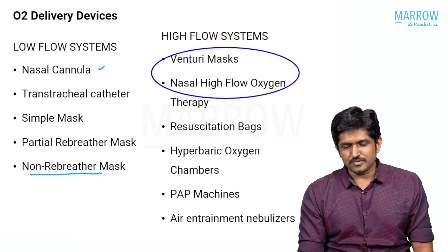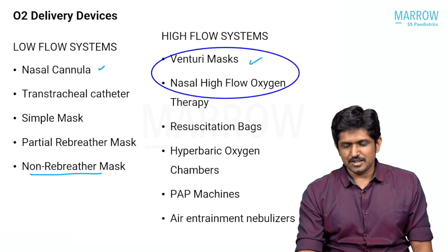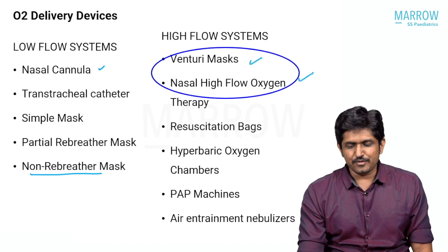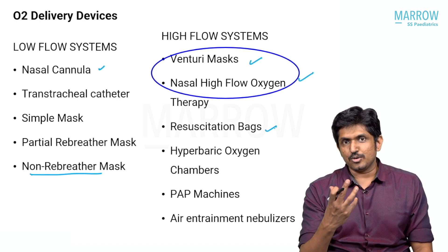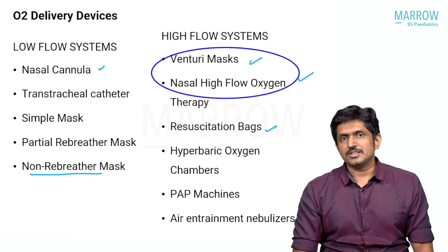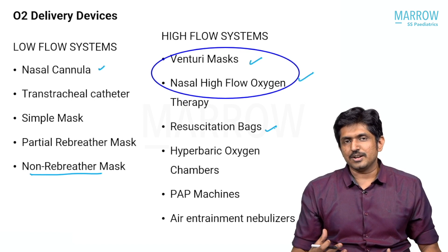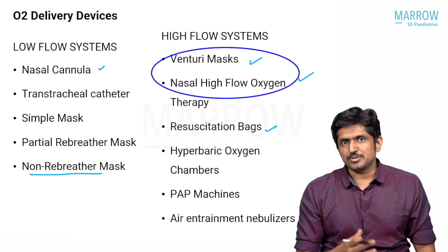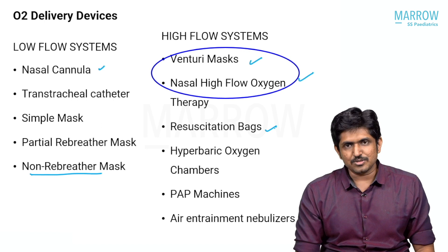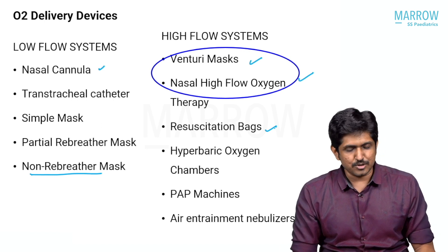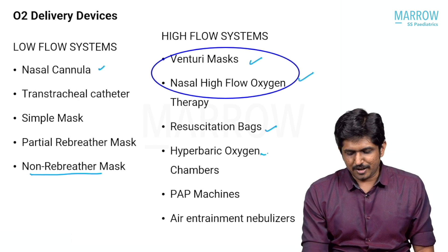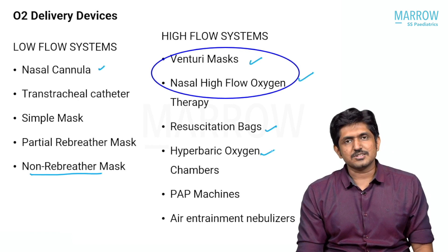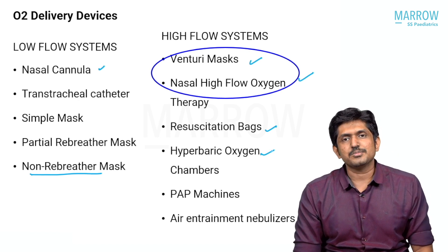What is a high flow system? A venturi mask, the nasal high flow oxygen which we are going to discuss right now, resuscitation bags, the JR circuits, the flow-related positive pressure devices, the Jackson D circuit, the Bain circuit — these are high flow devices. Hyperbaric oxygen chambers and air entrainment nebulizers are also high flow.